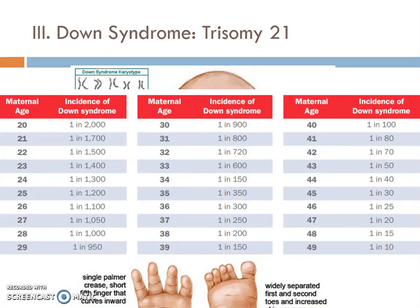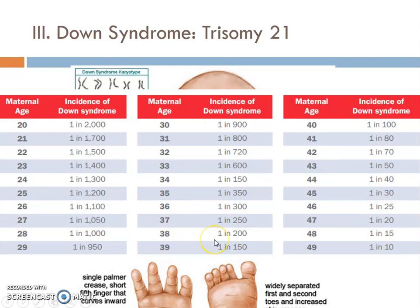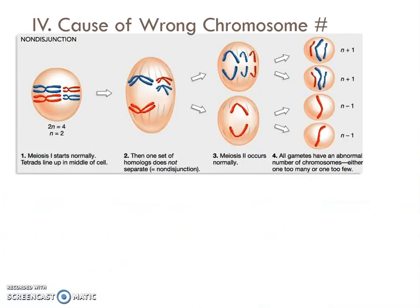We can talk about how people tend to get this extra chromosome — a lot of it relates to the age of the mom. Looking at the data: if a mom has a baby at age 28, there's a one in a thousand chance the baby will have Down syndrome; at age 38, it's one in 200. The trend is clear: as the mother gets older, the chance of having a baby with Down syndrome goes up, which is why older women are considered slightly higher risk.